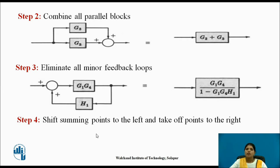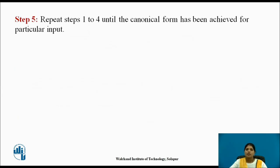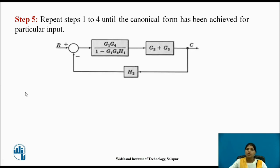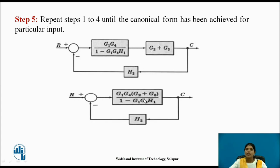Step 4: shift all summing points to the left side and all takeoff points to the right side. Step 5: repeat steps 1 to 4 until the canonical form has been achieved. Here these two blocks are connected in series, so they get multiplied with each other and we get the output.